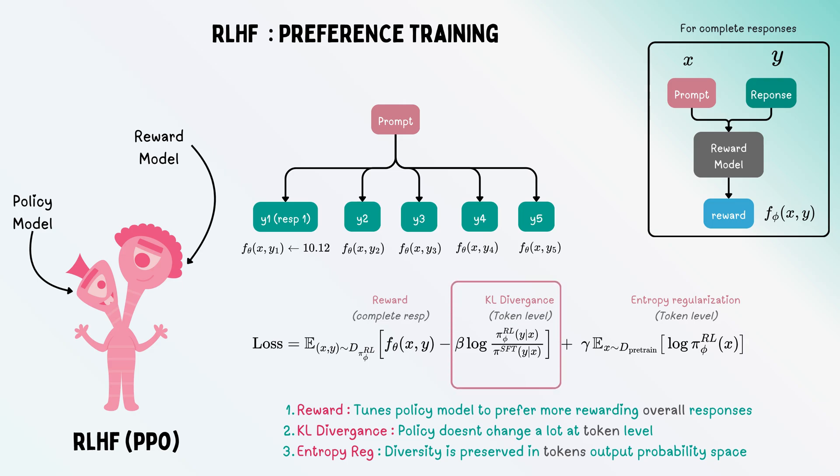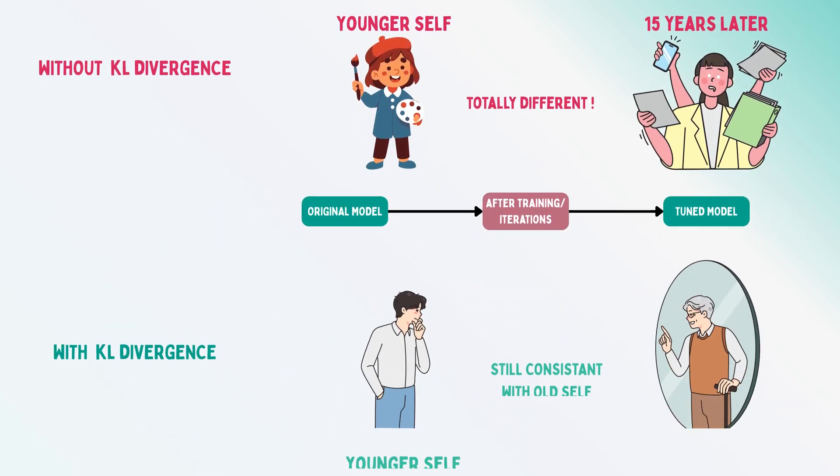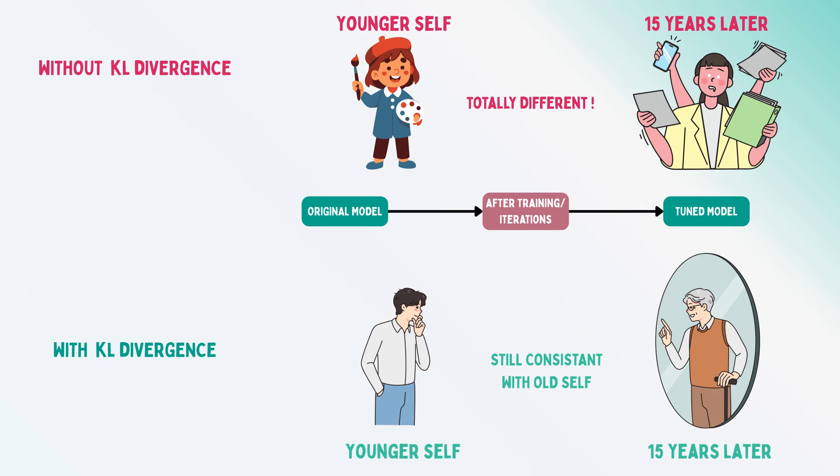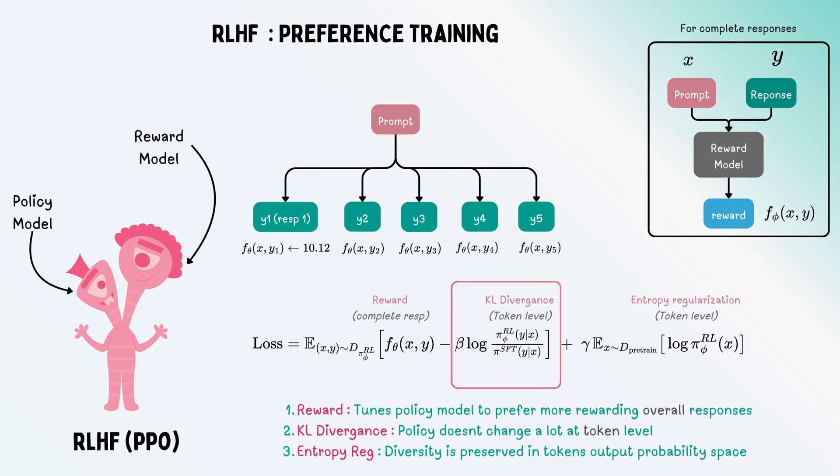KL divergence ensures the model doesn't start producing crazy different outputs—it stays similar to its original response. It ensures the model isn't very different probabilistically from the original policy. The next term is entropy regularization.